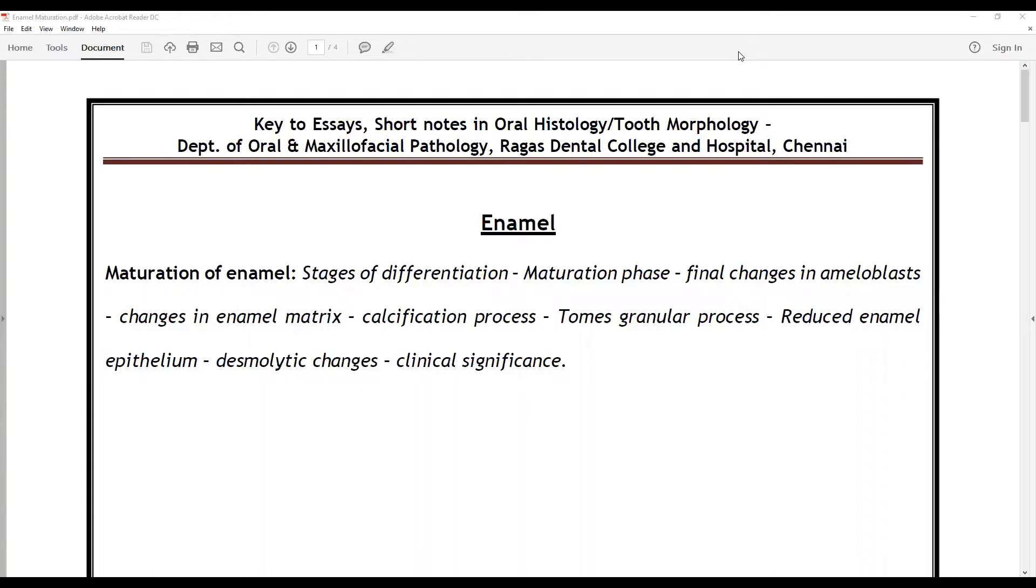...the stage of differentiation, especially the maturation phase with emphasis on the final changes in the ameloblasts, how they bring about a change in the enamel matrix and proceed with the calcification and mineralization process. The role of Tomes granular process, the formation of reduced enamel epithelium, you need to talk about the desmolytic changes and the clinical significance of all these stages.